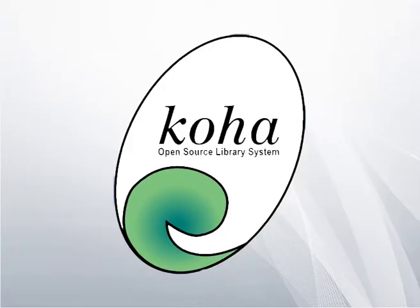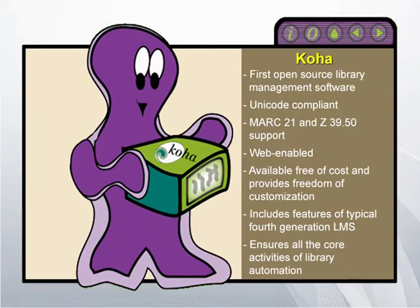We will now study different features of Koha. The remarkable features of Koha are that it is the first open source library management software, Unicode compliant from the beginning, and supports the MARC 21 family of standards — including not only bibliographic format but also authority format, holdings format, and classification format. Community information format support is not readily available but anyone can create a framework for it using Koha's cataloging editor. Koha also supports Z39.50 on a two-way basis.